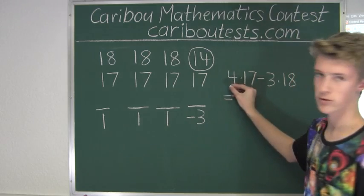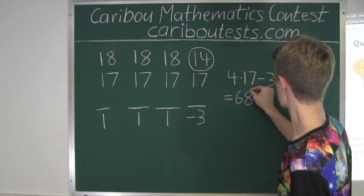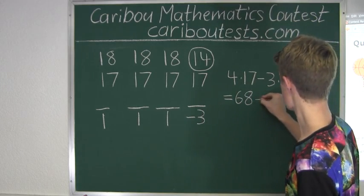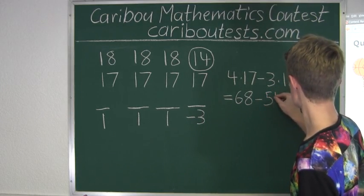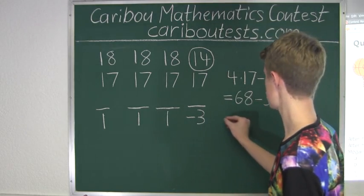So we have 4 times 17, which is 68, then we have 3 times 18, which is 54, and we have minus 54, and 68 minus 54 is, again, 14.